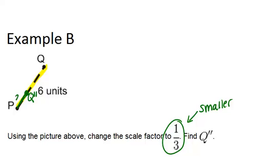So this should be 2, and if we divide this out, we can see that it's about 1 third of the way of the whole original segment. So that's Q double prime.